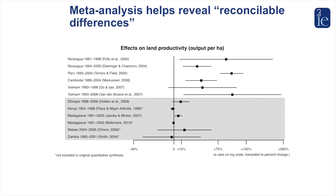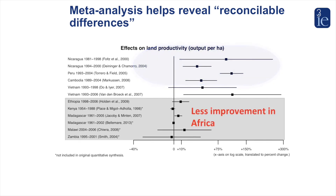On your screens you see the meta-analysis by Stephen Lawry, Cyrus Sammi, and co-authors, which looks at the impacts of land tenure reforms on productivity. It shows very clearly that programs in Asia and Latin America — shown in the top parts of the figure — are highly effective, but it also shows that programs in sub-Saharan Africa — shown in the lower part — are less effective. The authors concluded this was because land reforms were being implemented either where traditional tenure rights already provided security for farmers, or because reforms were not implemented alongside complementary measures to improve access to credit and other inputs.